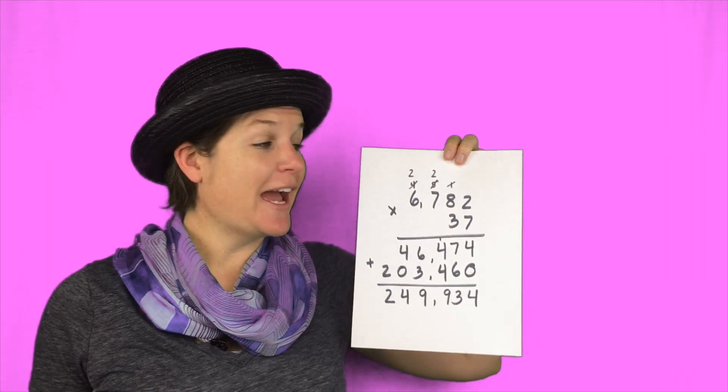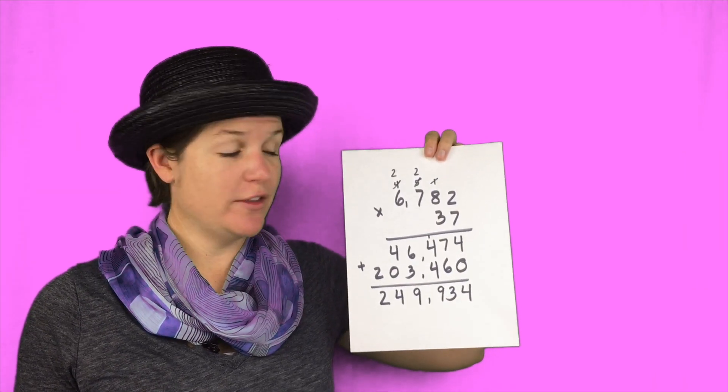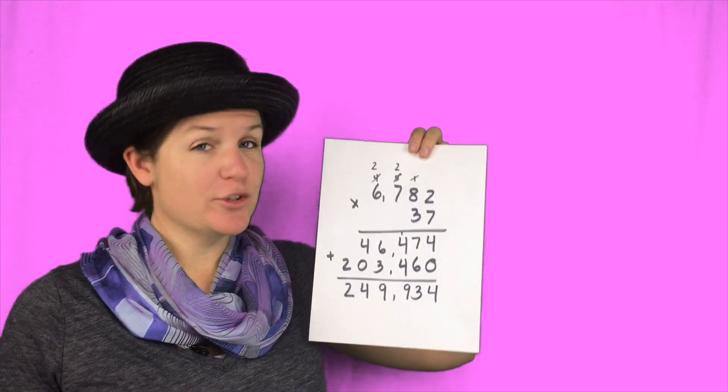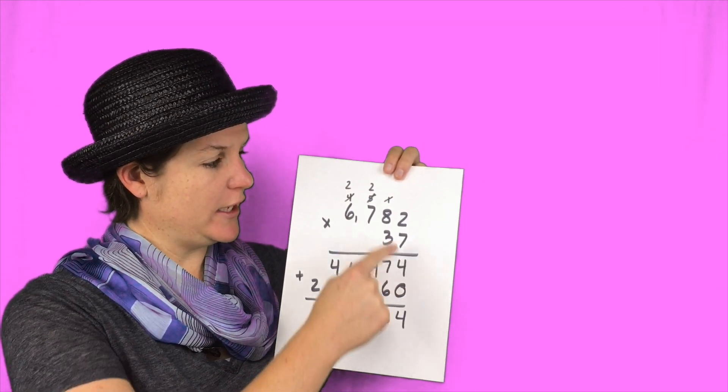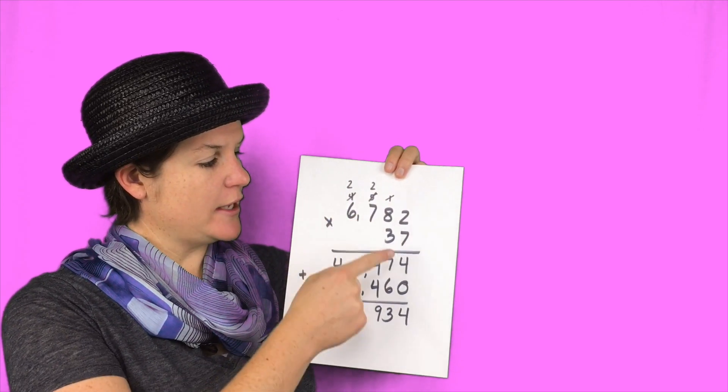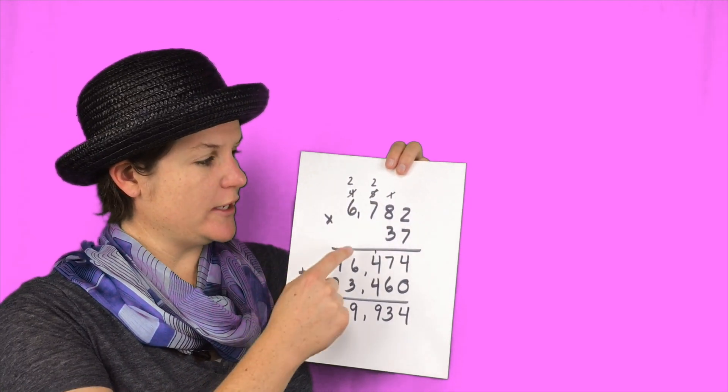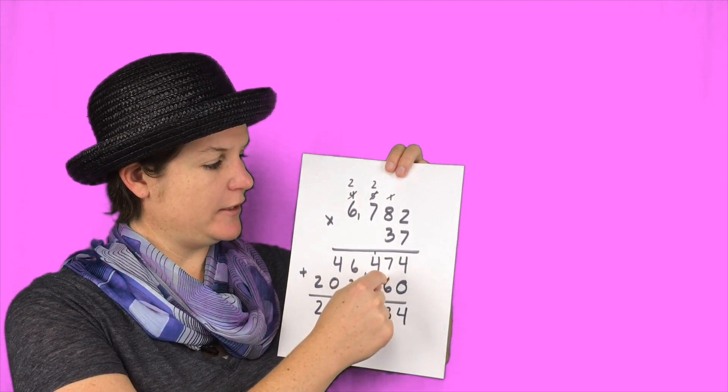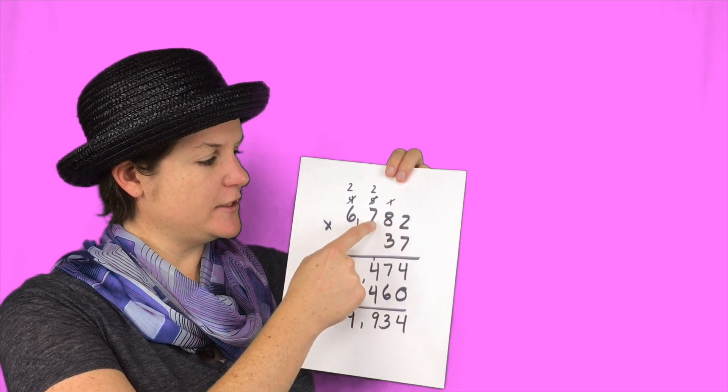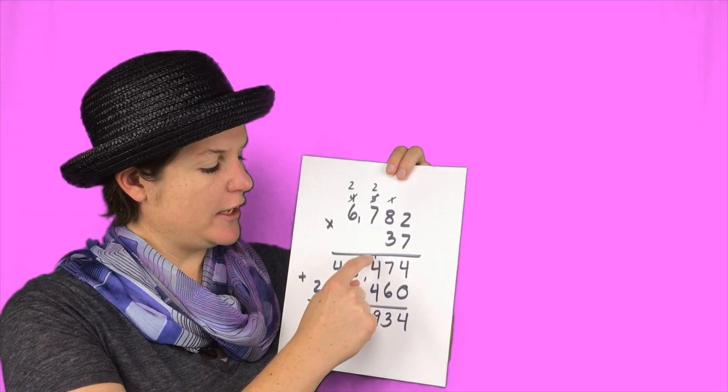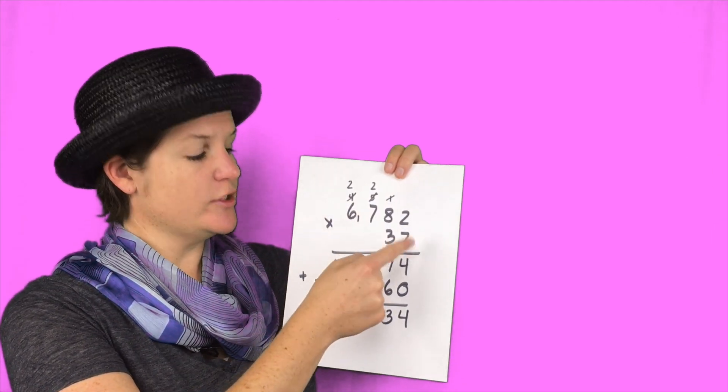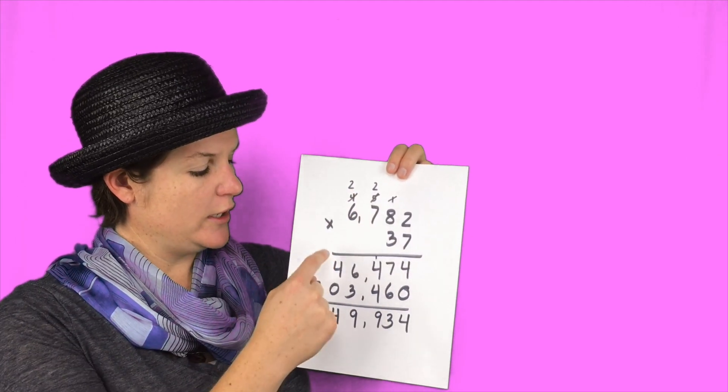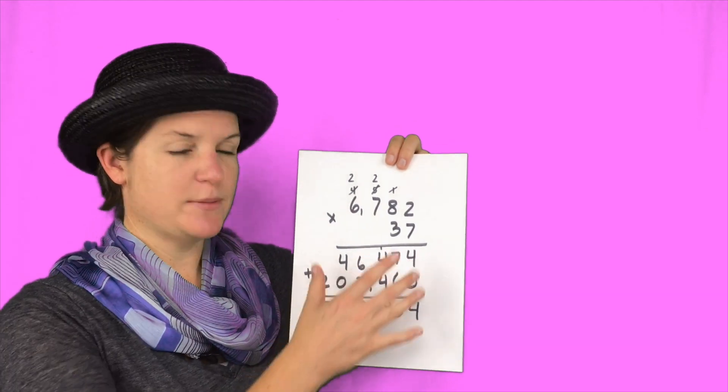Hi, everybody. I use multiplication to solve this problem. Here's what I did. So I did 7 times 2 is 14. Carry the 1. 7 times 8 plus 1 is 57. 7 times 7 plus 5 is 44. 6 or 7 times 6 plus 4 is 46. So that's my first product.